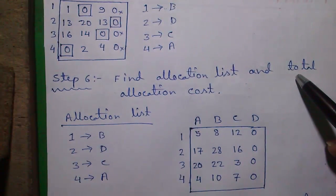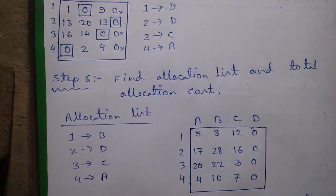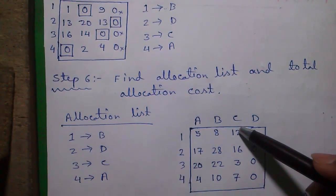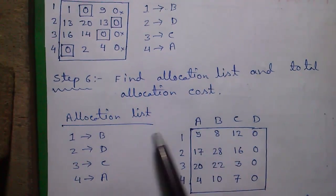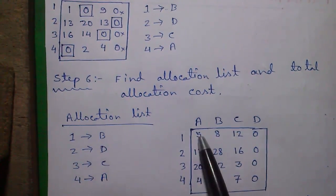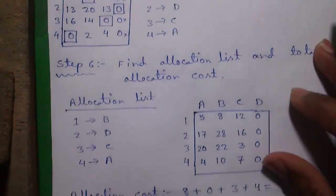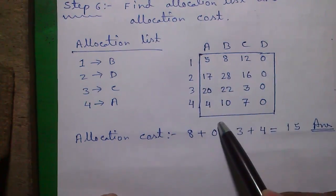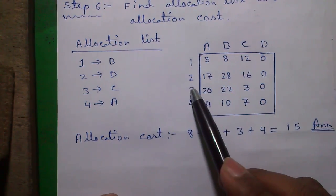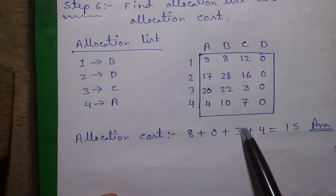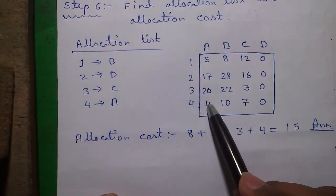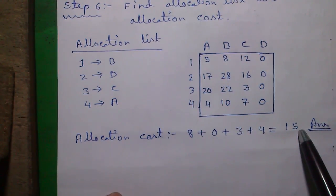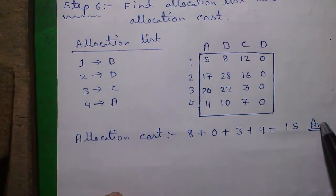And the allocation cost. Allocation cost is calculated in reference to the original matrix. So our original matrix before performing the column operation was this. In original matrix, in 1B position there is 8, plus in 2D position we have 0, plus in 3C position we have 3, plus in 4A position we have 4. So we will get 8+0+3+4=15. So this is our required total allocation cost.